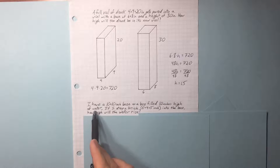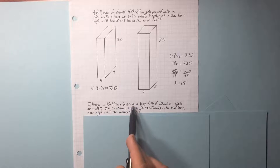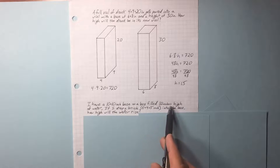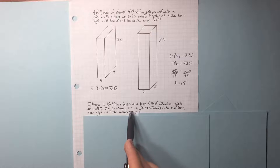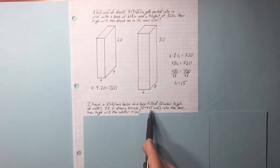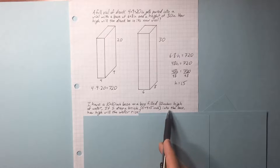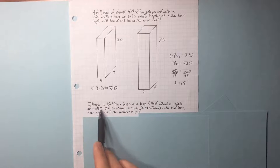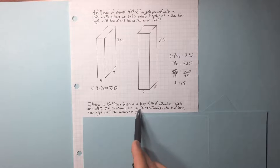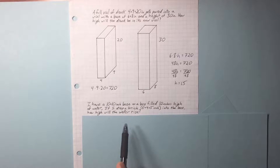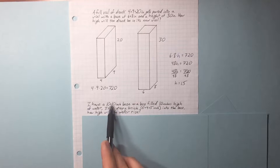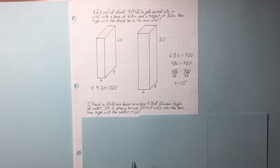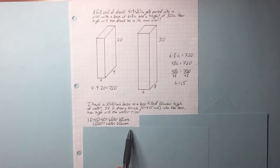Let's look at another problem. I have a 10 by 10 inch base on a box filled 10 inches high of water. If I drop a brick 5 by 4 by 5 inches into the box, how high will the water rise? There's volume of water in this first container and the brick itself has volume too. Let's figure out how much water this container had before the brick fell into it — there's a thousand cubic inches of water volume.